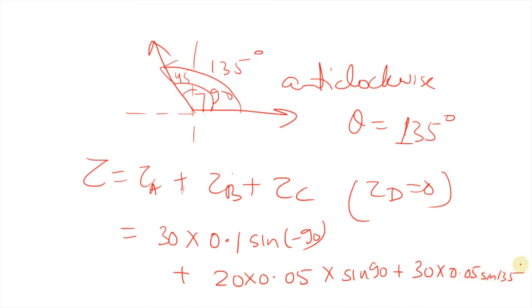When you solve, torque A will be minus 3, torque B will be plus 1, and torque C is 1.0607. When you get this whole thing, this is minus 0.94 newton meters.